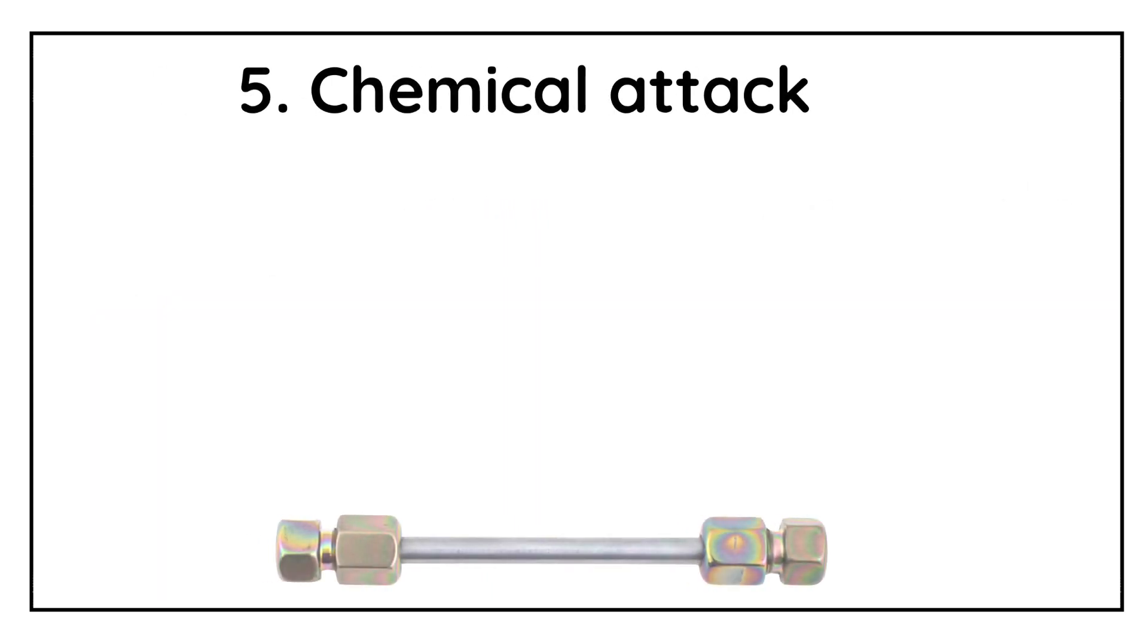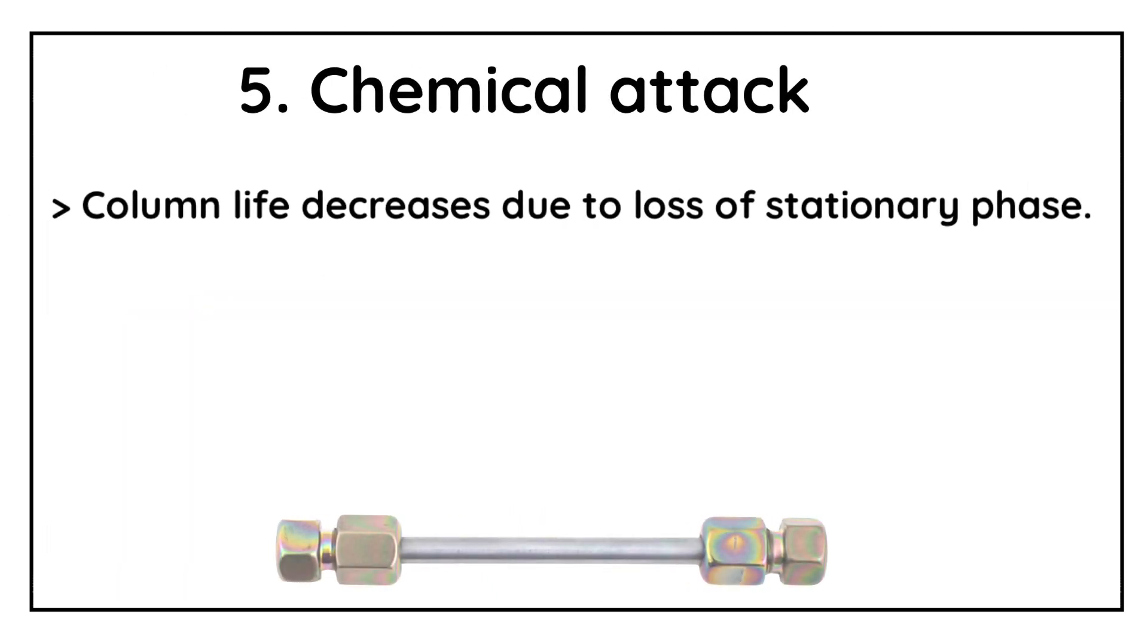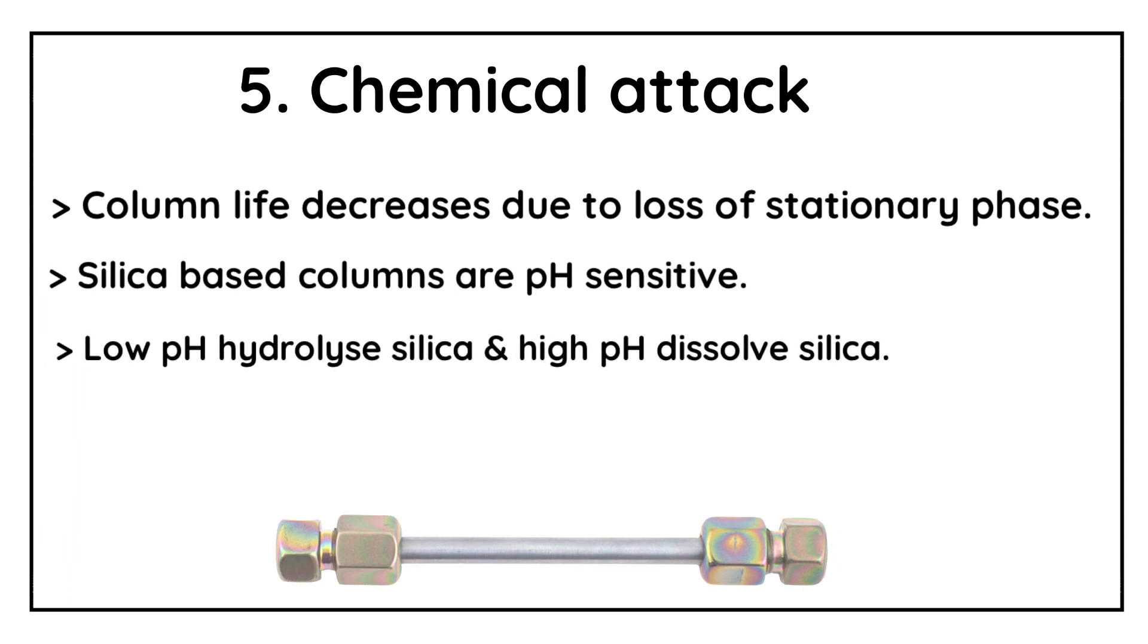Chemical Attack. Column lifetime can reduce significantly by the loss of stationary phase during usage. Always try to avoid the combinations of the mobile phase and the stationary phase which lead to the rapid loss of the bonded phase. For example, silica based columns are pH sensitive. Low pH will hydrolyze the bonded phase and high pH will dissolve the silica. If mobile phase pH is near to 2 or 8, then before usage of the column, please check the manufacturer's COA recommendations related to the pH.